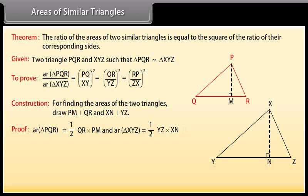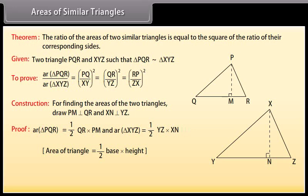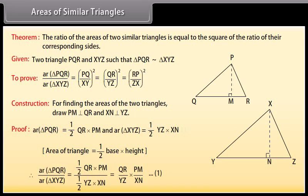Proof. Area of triangle PQR equals 1/2 × QR × PM, and area of triangle XYZ equals 1/2 × YZ × XN. Since area of a triangle equals 1/2 × base × height, therefore area of triangle PQR upon area of triangle XYZ equals QR upon YZ multiplied by PM upon XN. Mark it as equation 1.